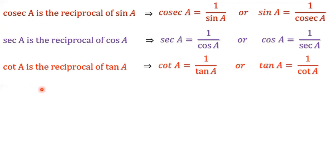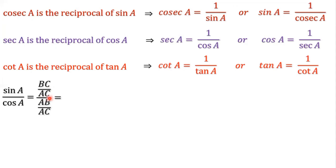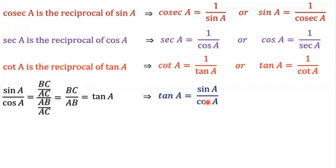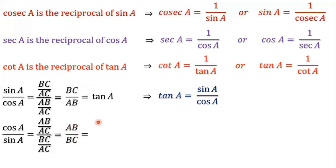Remember these reciprocals: cosec A is the reciprocal of sin A, sec A is the reciprocal of cos A, cot A is the reciprocal of tan A. Now divide sin A by cos A. Sin A is BC by AC and cos A is AB by AC. So BC by AC divided by AB by AC equals BC by AB — AC cancels out — and BC by AB, which is opposite by adjacent, is called tan A. That implies tan A is equal to sin A by cos A. Similarly, dividing cos A by sin A gives AB by BC, which is adjacent by opposite, called cot A. So cot A is equal to cos A by sin A.